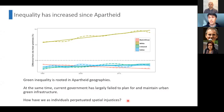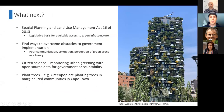Our paper has mostly been to describe this inequality rather than find solutions. South Africa does have the Spatial Planning and Land Use Management Act of 2013, which provides a really good legislative basis for equitable access to green infrastructure and green space in urban areas, though it may be too soon to judge how effectively it has been implemented.